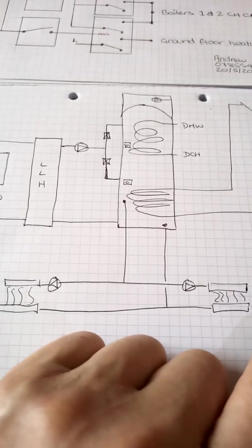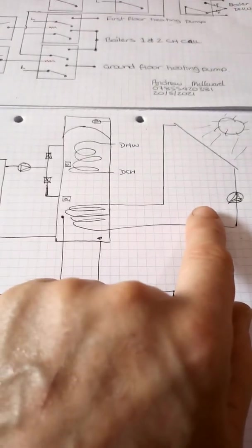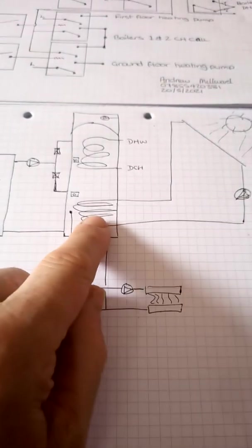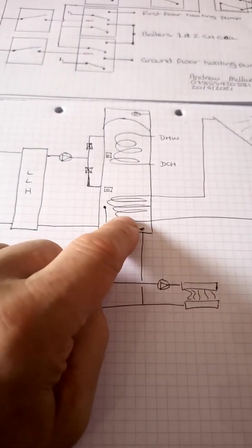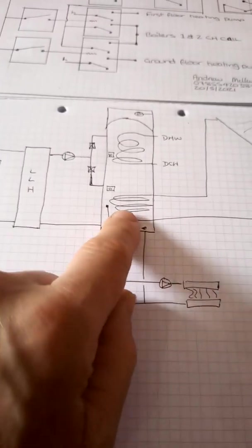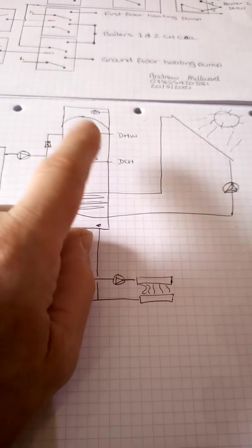There'll need to be some other work on that to make all of those things correct. Now it's connected to a solar system, so when the solar is operating it heats the very bottom of the cylinder. So this can actually contribute heat to the heating system and it can contribute heat to the hot water system.